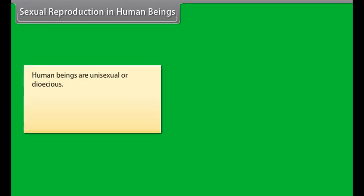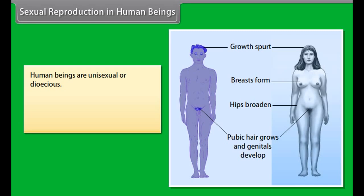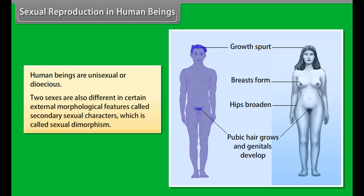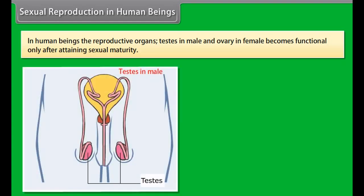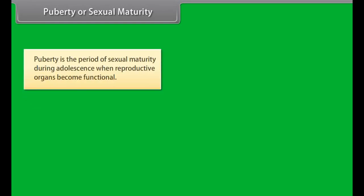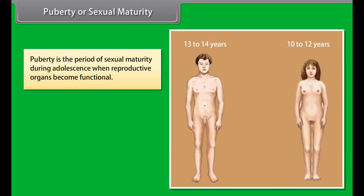Human beings are unisexual or dioecious. Two sexes are different in certain external morphological features called secondary sexual characters, which is called sexual dimorphism. The reproductive organs — testes in males and ovaries in females — become functional only after attaining sexual maturity. Puberty is the period of sexual maturity during adolescence when reproductive organs become functional.